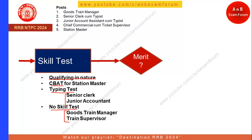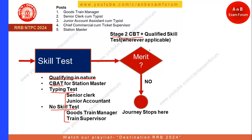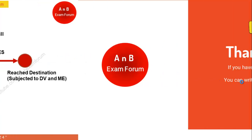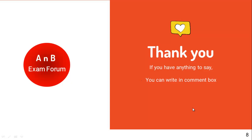After the skill test, they will check Stage 2 CBT marks along with whether you have qualified the skill test, and based on that a final merit list will be made. For 1,000 vacancies with 8,000 people called, only 1,000 will be chosen based on Stage 2 scores — so Stage 2 is very important. If you clear Stage 2 CBT and qualify the skill test, you reach the destination and get your job, subject to document verification and medical examination. Thank you for watching — if you have any questions, write in our comment box.